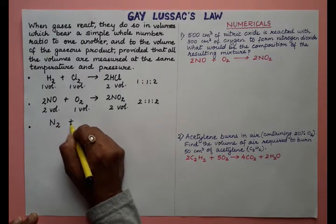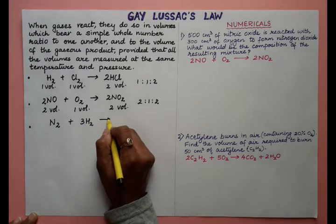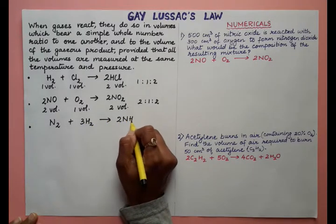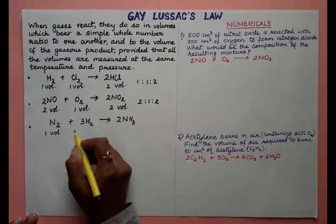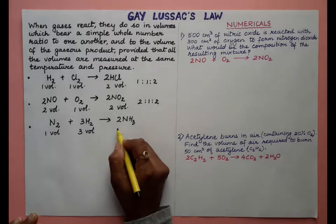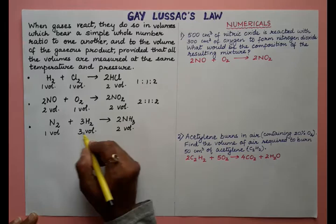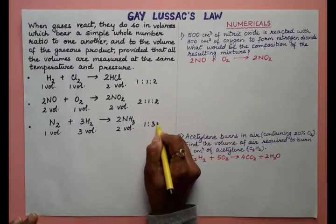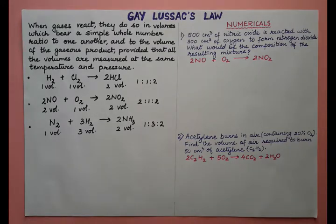The third example is Haber's process: nitrogen reacts with hydrogen to give ammonia. Here, one volume of nitrogen reacts with three volumes of hydrogen, and we get two volumes of ammonia. The ratio is 1:3:2 for the reactants and product. These three examples help us understand Gay-Lussac's law.